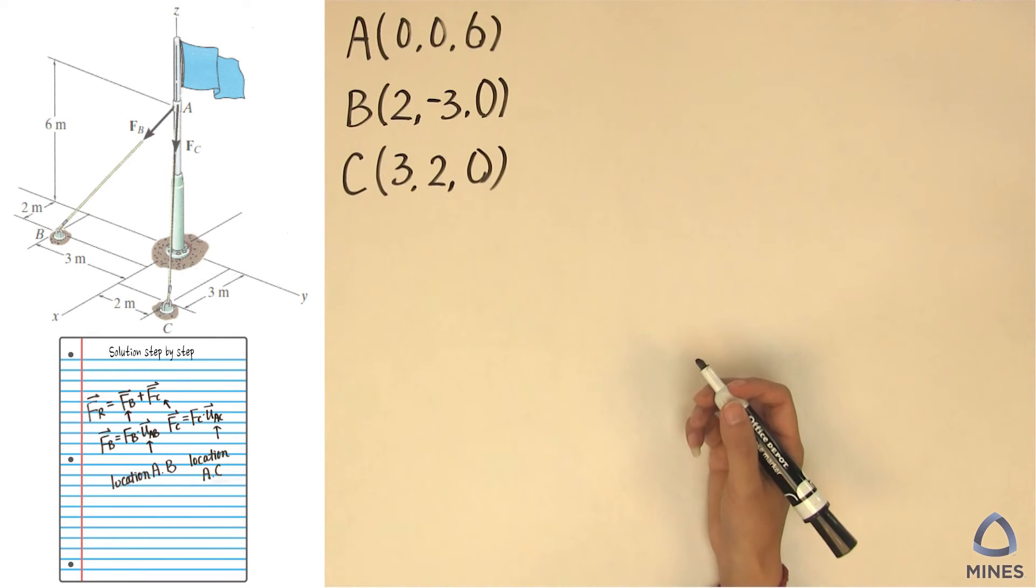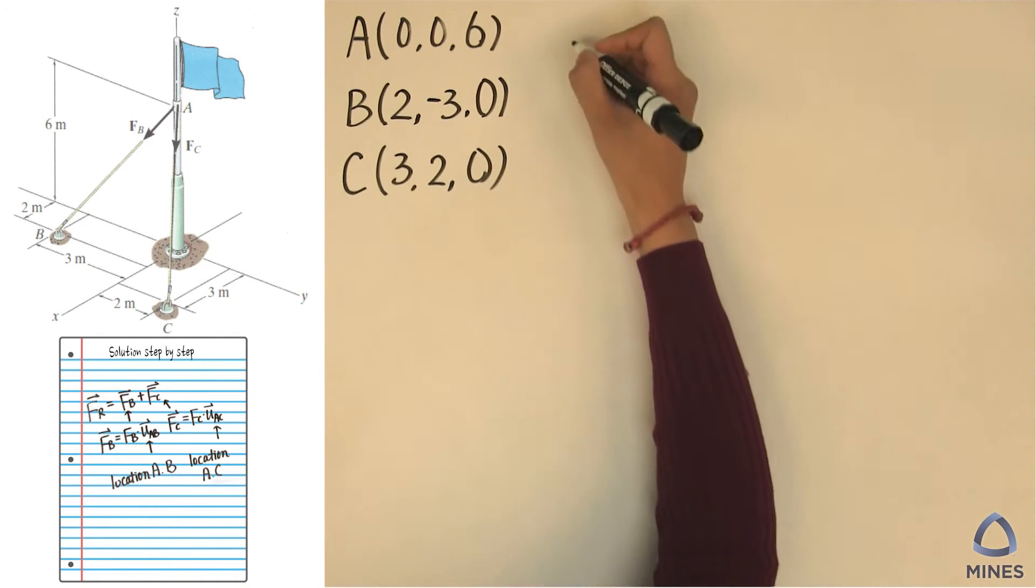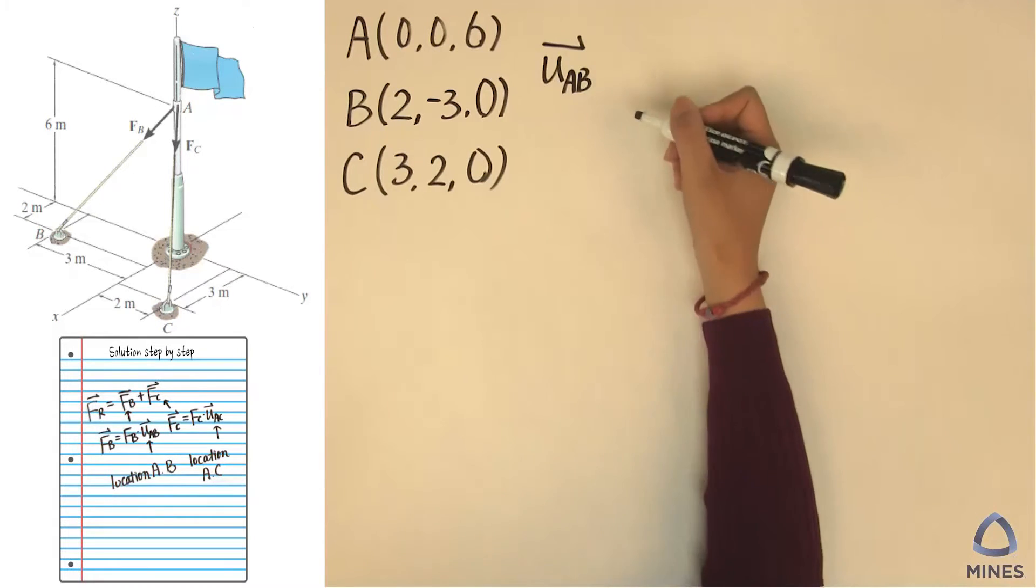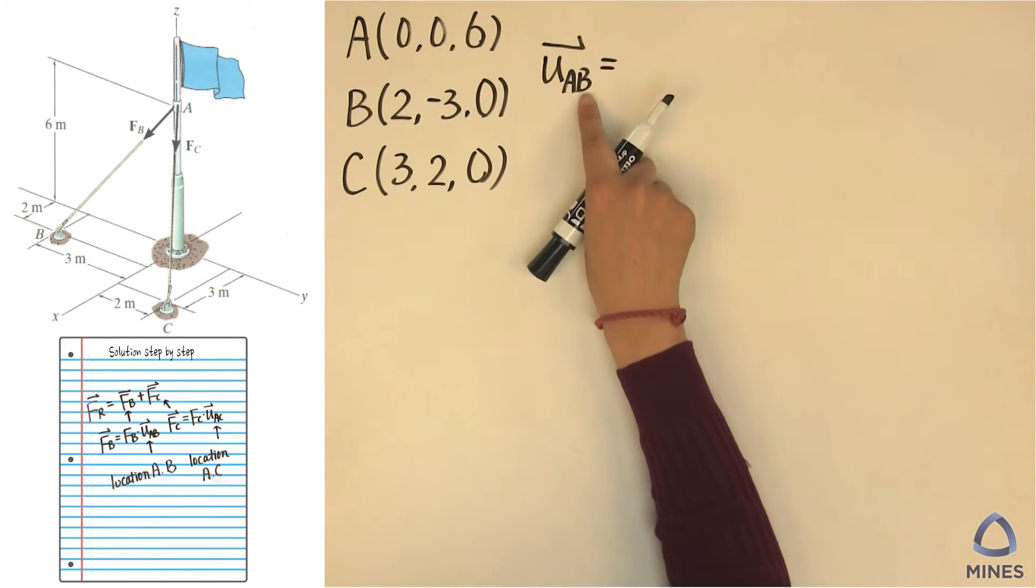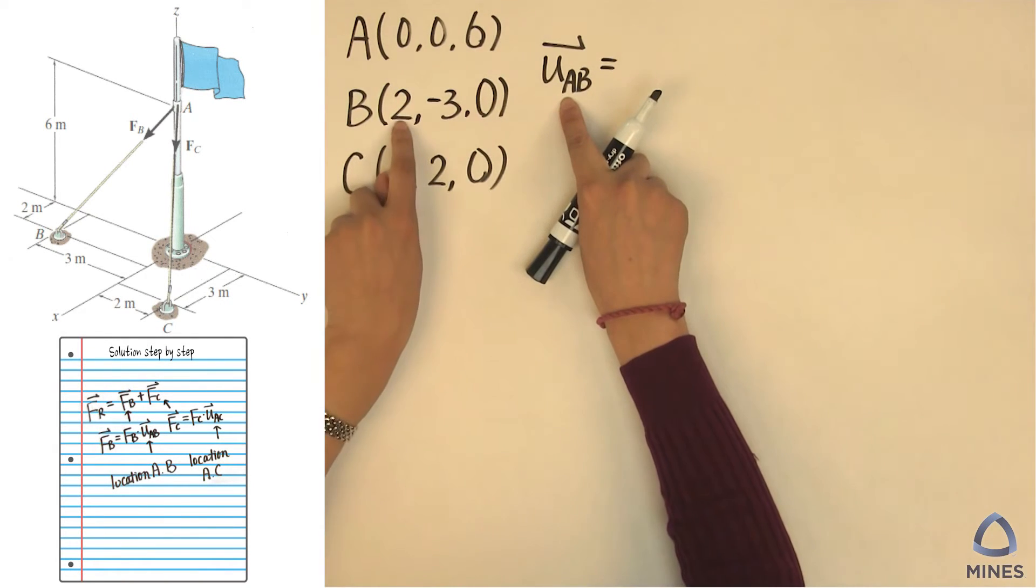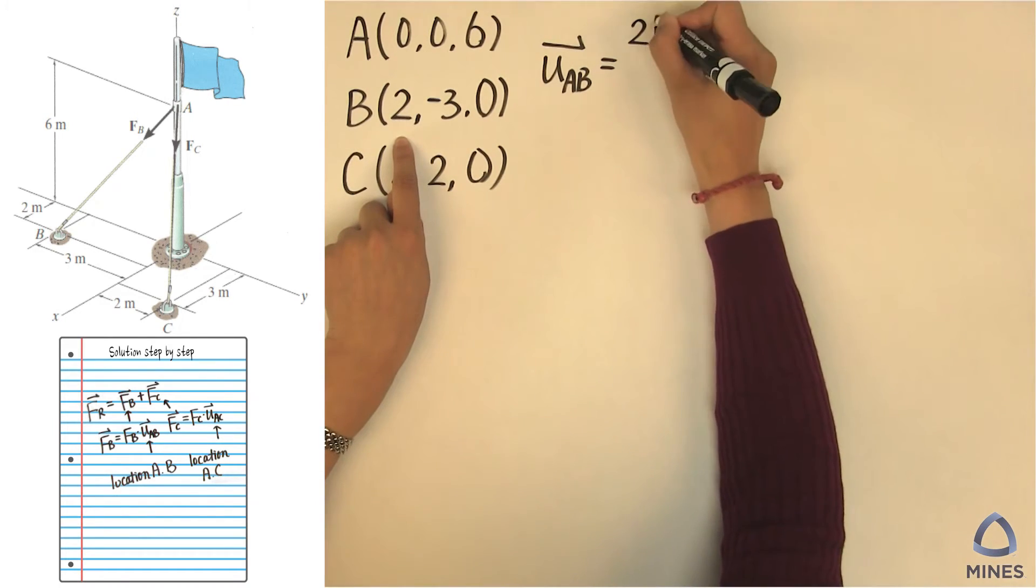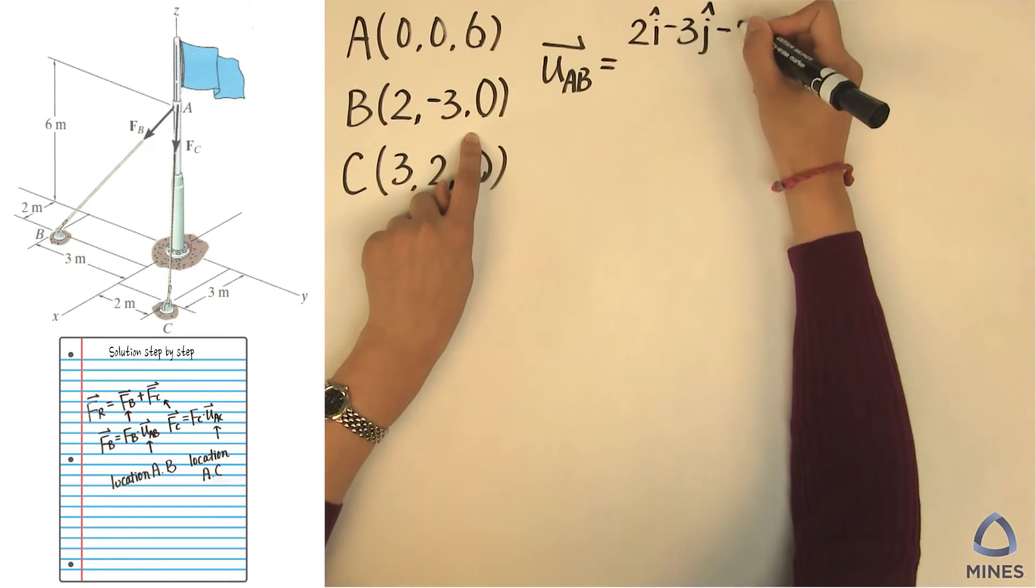So after you find all the locations here, the next thing you need to do - you can see on the clue here - we have to find out the unit vector in the AB direction. Now, always remember we are going to use endpoint minus the start point, so which means we are going to use B location minus A location.